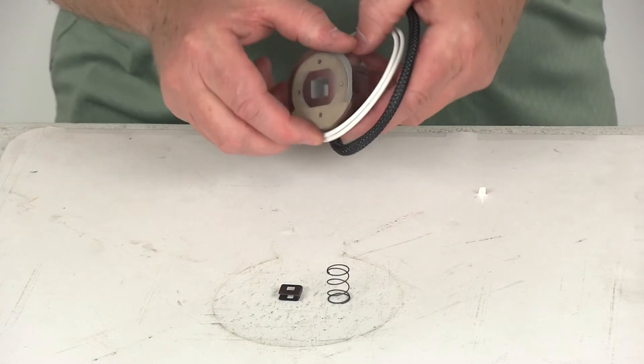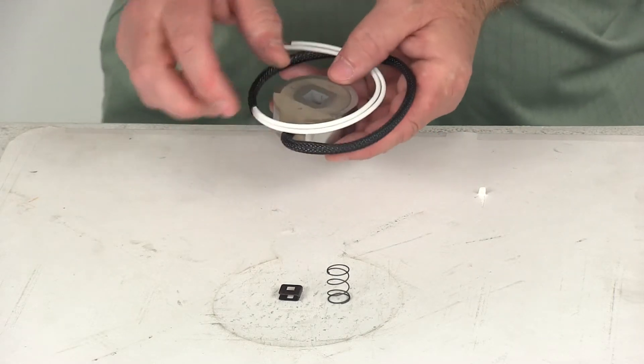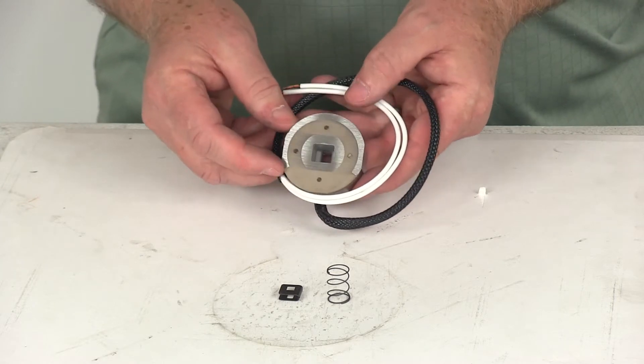Today we're going to take a look at the replacement trailer brake magnet kit for your Dexter 7-inch and 10-inch trailer brake assemblies.